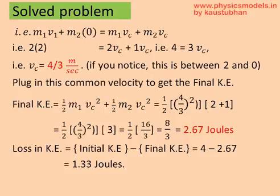Now, plug that into the final kinetic energies. So just do half mv squared for both the blocks. So we get half m1 into V common squared plus half m2 into V common squared, and that will give you 2.67 joules.